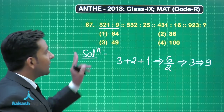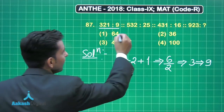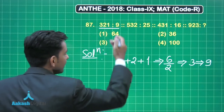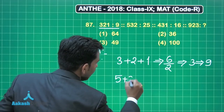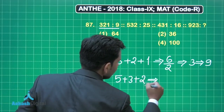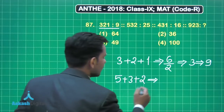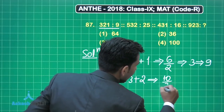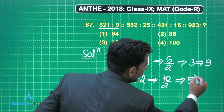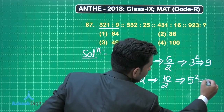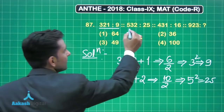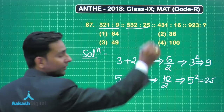Now move to the next group of numbers. We have 532 and 25. Now add the digits: 5 plus 3 plus 2, divided by 2 — this is 10 divided by 2 and we are obtaining 5, and the square of 5 is equal to 25. So this is the same relation in the second group of numbers.